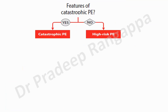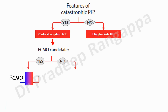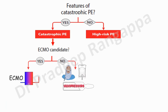If the patient is in catastrophic PE with cardiac arrest or escalating vasopressor requirements, the first question the algorithm asks is whether the patient is an ECMO candidate. If yes, they should be placed on VA ECMO. If not, support with HFNO, vasopressors, oxygen, and fluid optimization — balancing fluid between the RA and RV.